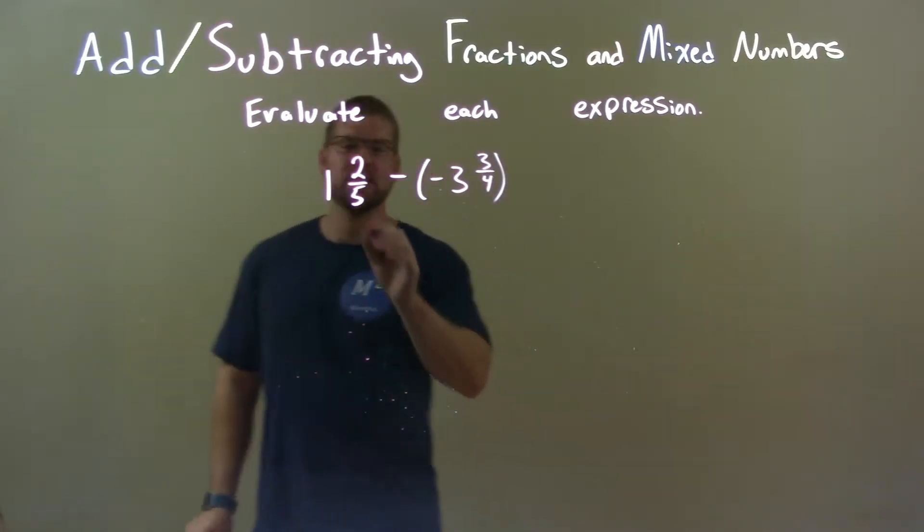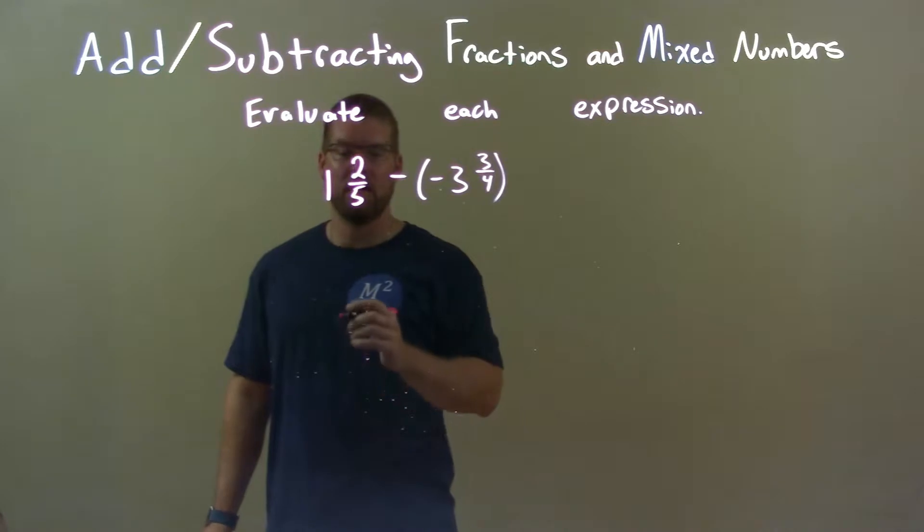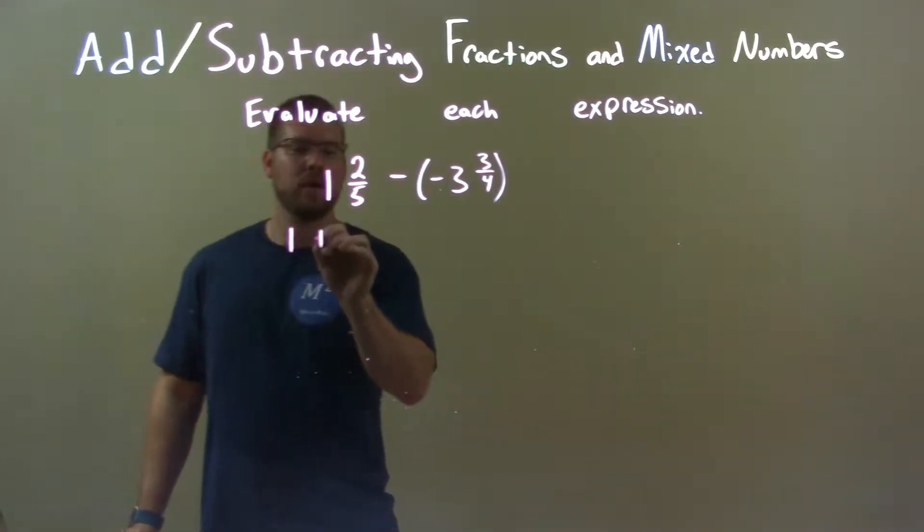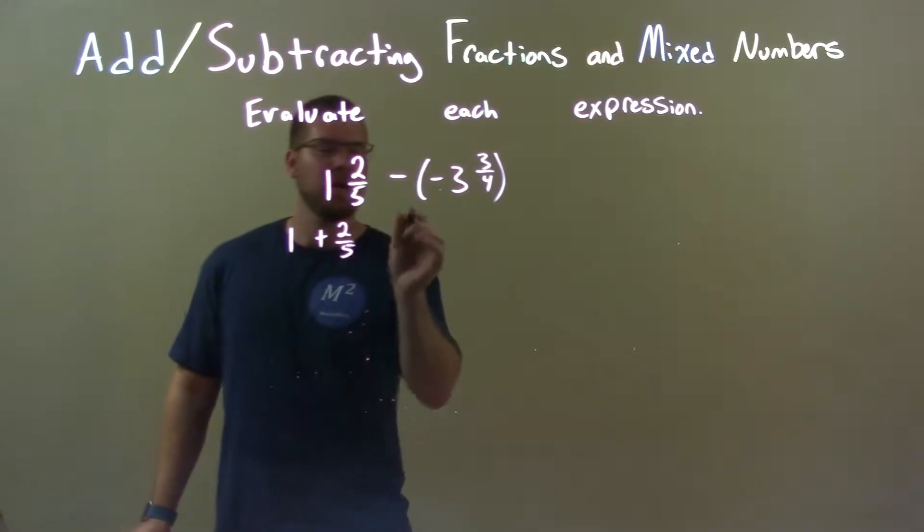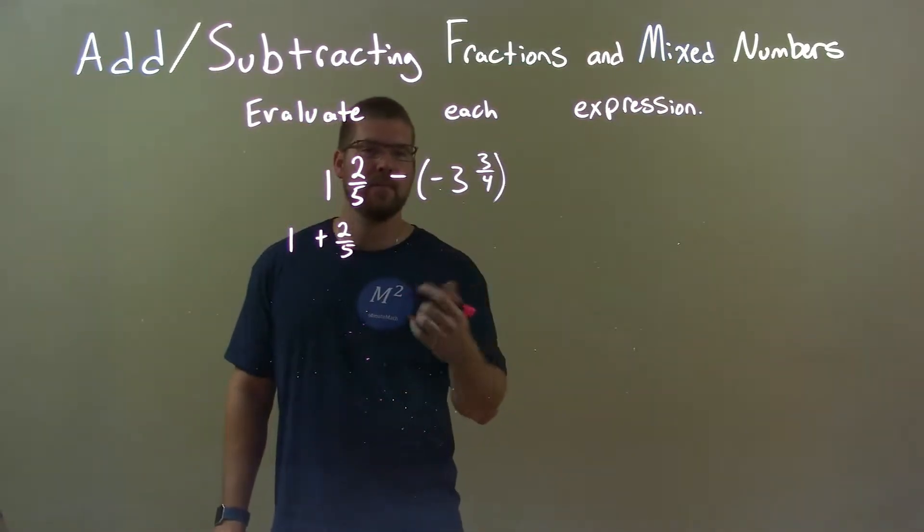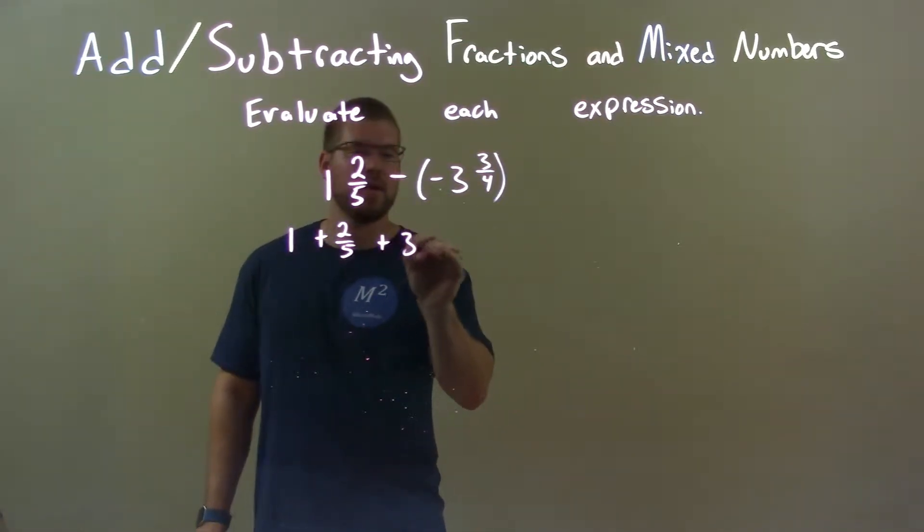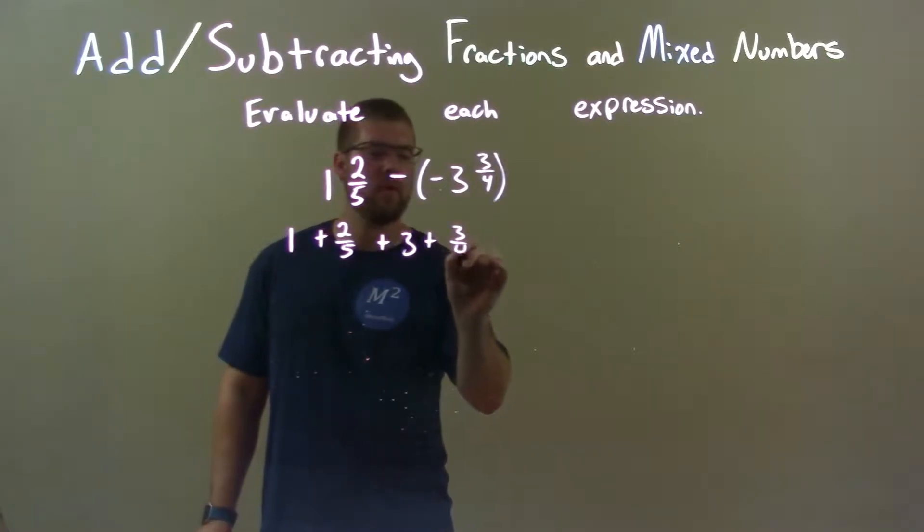Well, one thing I have to do here is I break this down, this mixed fraction to be a whole number and a proper fraction. So, 1 plus 2 fifths here. Now, subtracting a negative is the same thing as adding a positive. So, we have plus 3 plus 3 fourths.